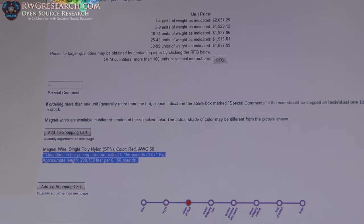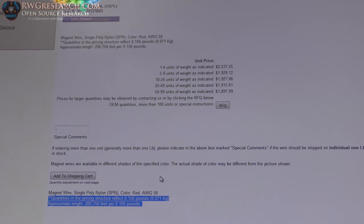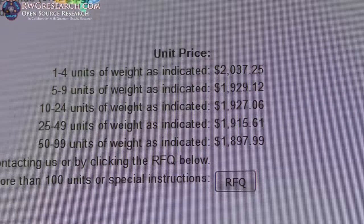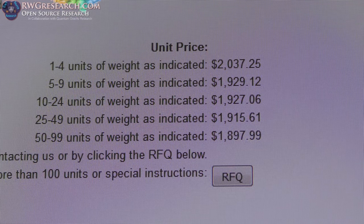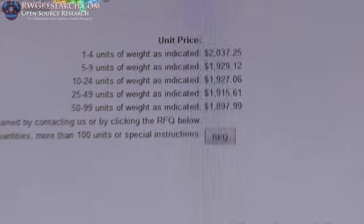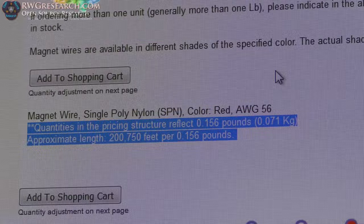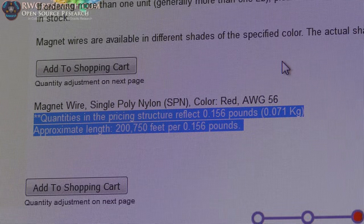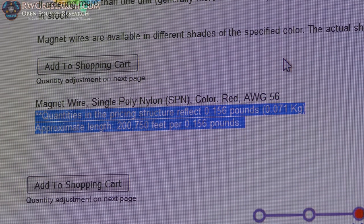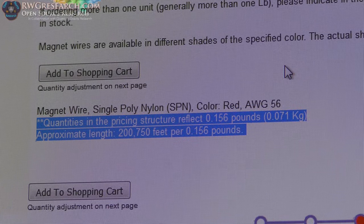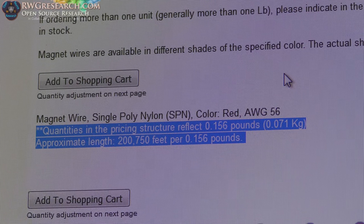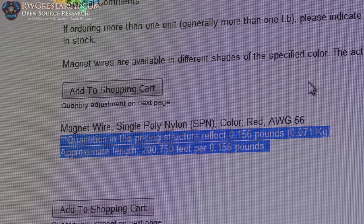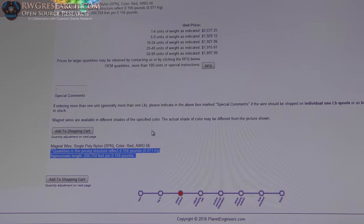So I went to look for some and I did find some. One spool of this stuff costs $2,037. Two thousand dollars, what the heck! Coming down here to look at things, it is 0.1156 of a pound. That's 200,750 feet per 0.156 of a pound, approximately. That's just crazy talk.